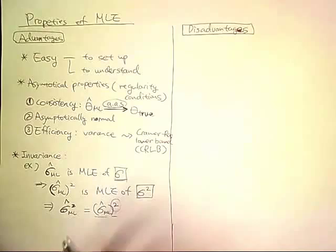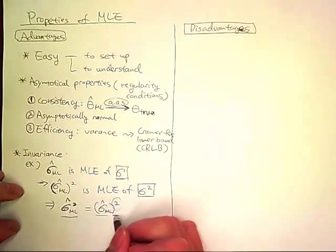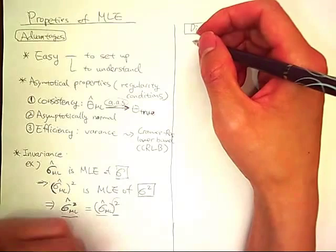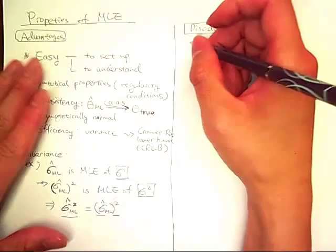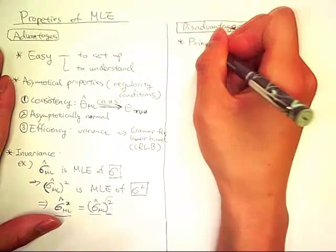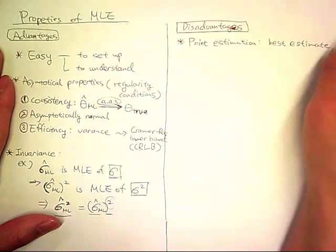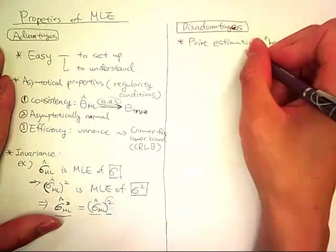And as we mentioned, MLE is invariant under this functional transformation. Now we're going to talk about the disadvantages of MLE. First disadvantage we're going to talk about is point estimation. MLE is a point estimation. It gives us a best estimate of an unknown fixed parameter, so it does not give us uncertainty measures.